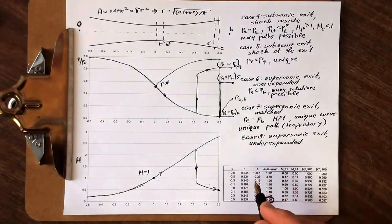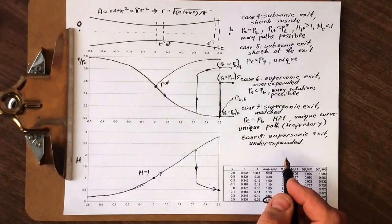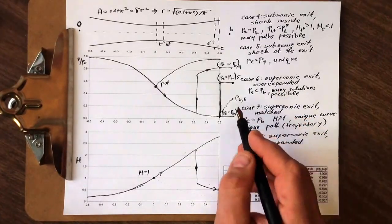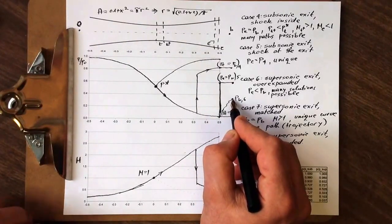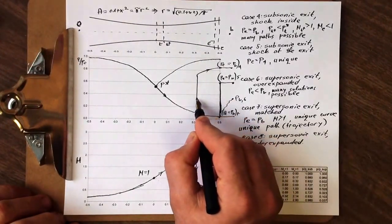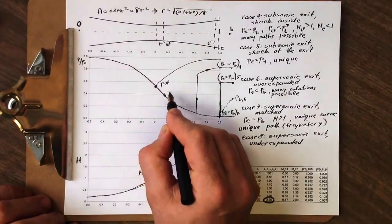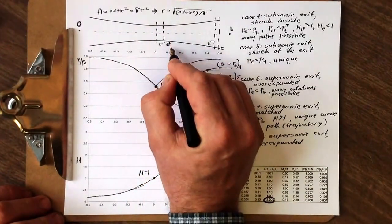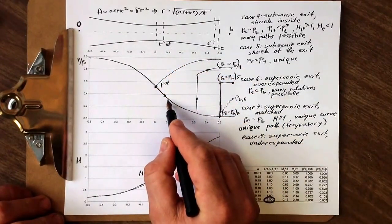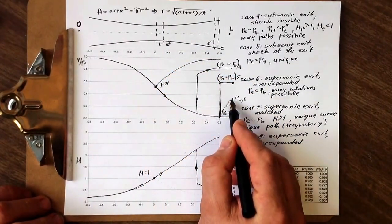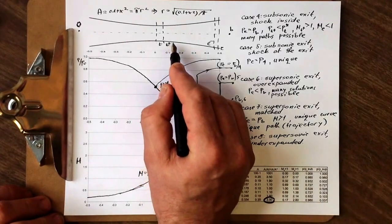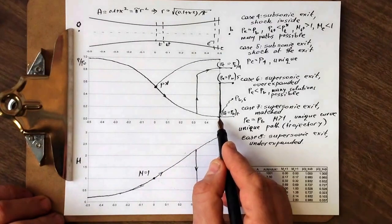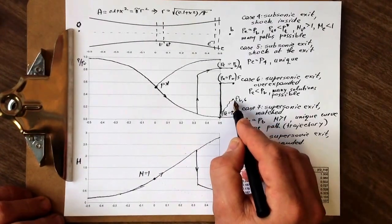Finally, case 8 is supersonic exit. We call this overexpanded, because if you imagine this PB pressure here, if the nozzle were only this big, only this extended after the throat, then the exit pressure would be matched to PB. But the nozzle expands further after that, and that's why we call that case overexpanded.